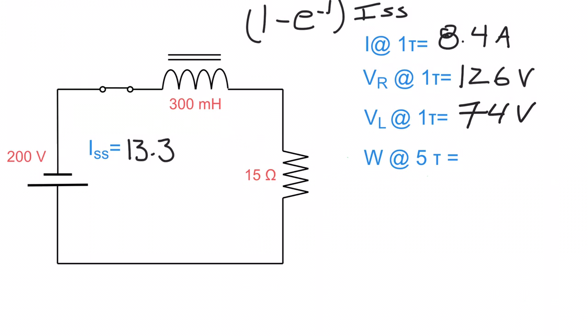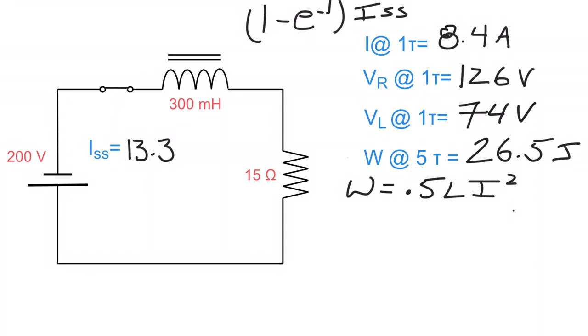The last thing is figuring out how much energy is stored in the magnetic lines of flux surrounding this inductor. Using W equals 0.5 times L times I squared, plugging in the numbers gives us 26.5 joules of energy stored in the magnetic lines of flux surrounding this inductor.